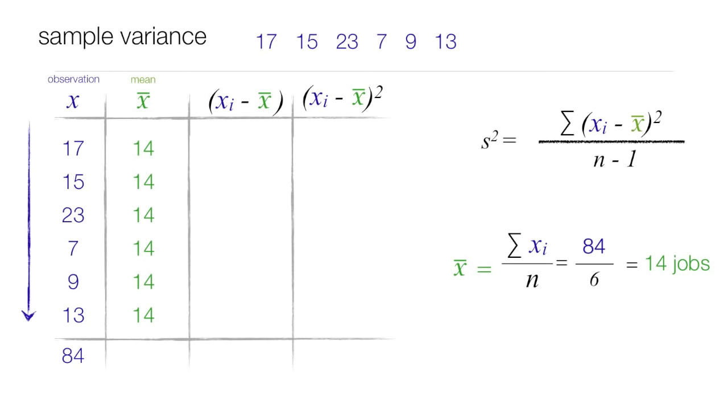Now the next column over is the observation minus the mean, like 17 minus 14, and of course that is equal to 3. Then I have 15 minus 14, that's equal to 1. 23 minus 14, that's equal to 9. 7 minus 14, that's negative 7. 9 minus 14, that's negative 5. 13 minus 14, that's negative 1. If I add up this column, it should always add up to 0. Always 0. That's a good way to check your numbers too.